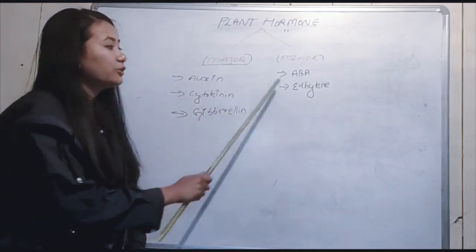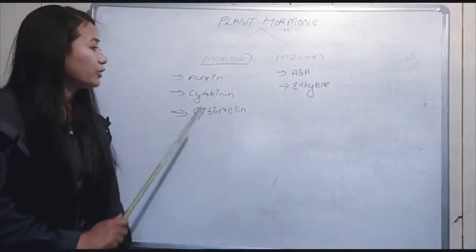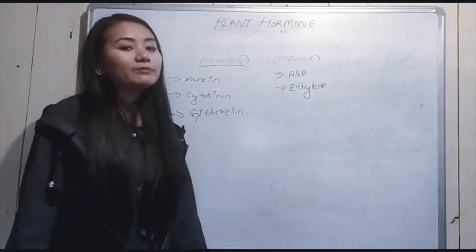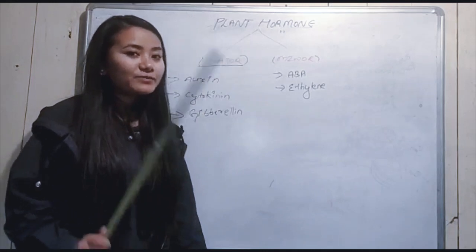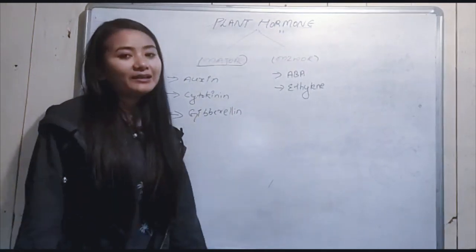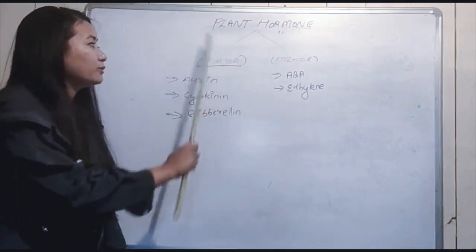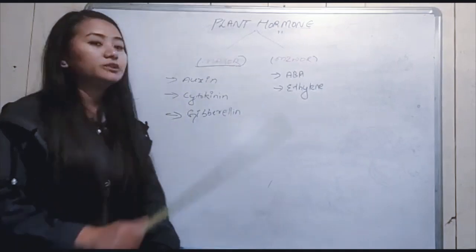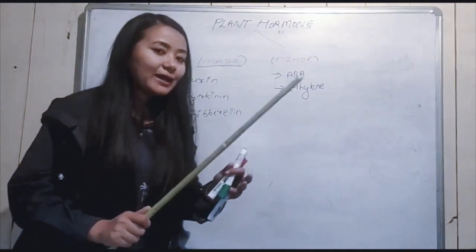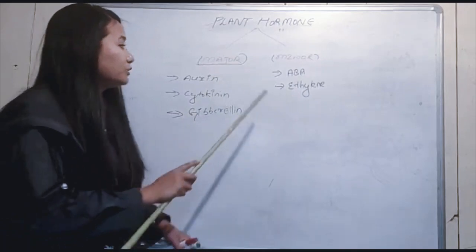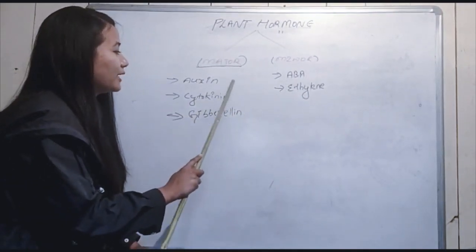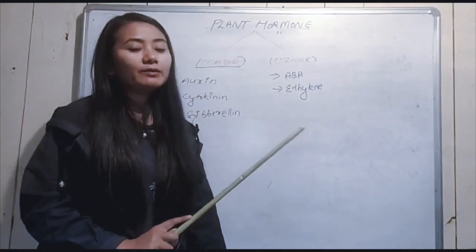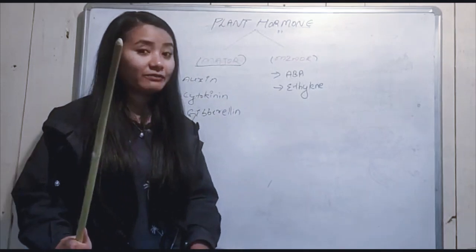To recap: three major hormones — auxin, cytokinin, and gibberellin — and two minor hormones — abscisic acid and ethylene. In the next video, we will discuss auxin in detail according to your syllabus.